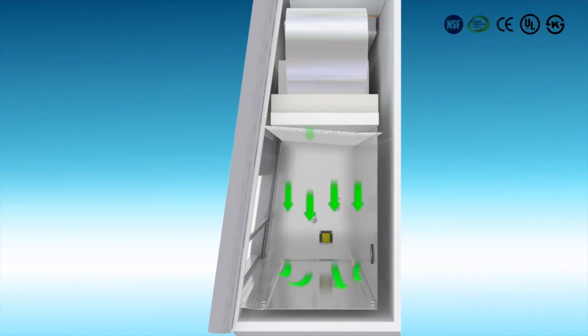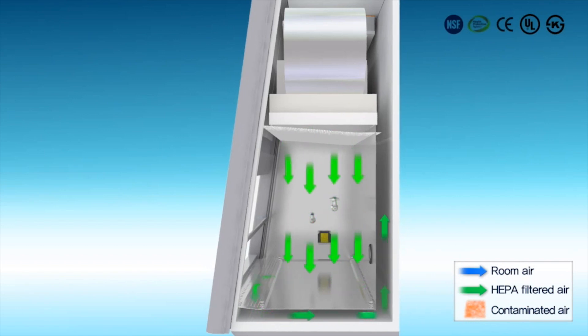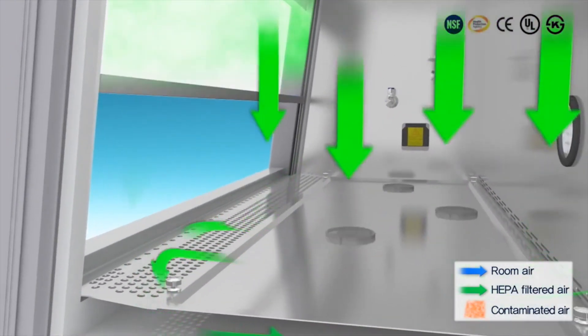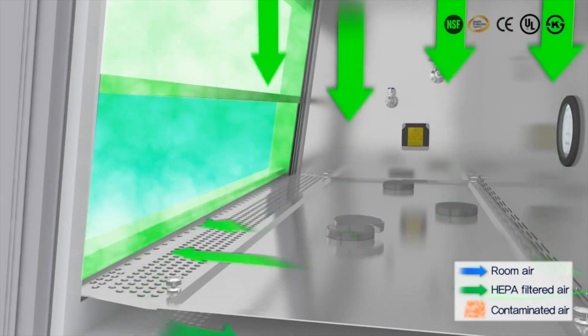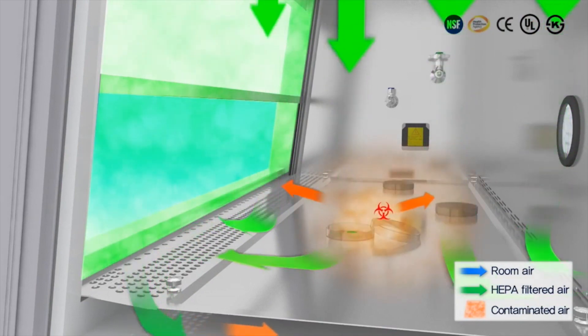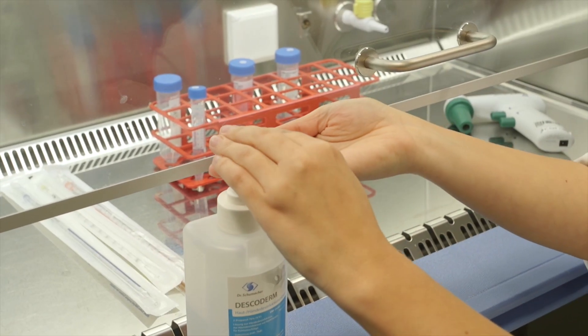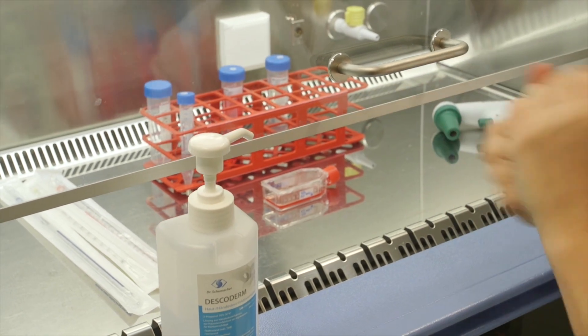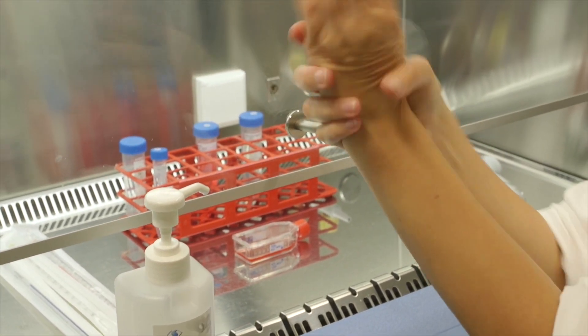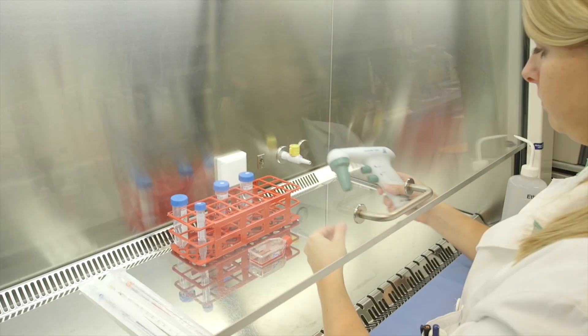Because the cells must be kept sterile, we have to work in the flow cabinet. The airflow in this cabinet flows in a particular direction that ensures a sterile environment. In this video, you can see the airflow paths. The best place to work is approximately in the centre of the cabinet, and it is important to keep a tidy work environment.